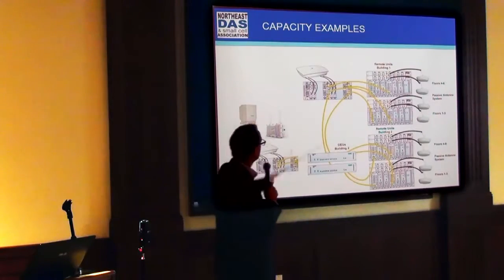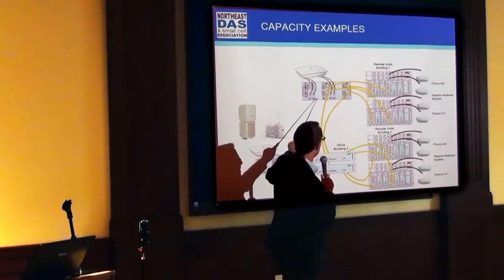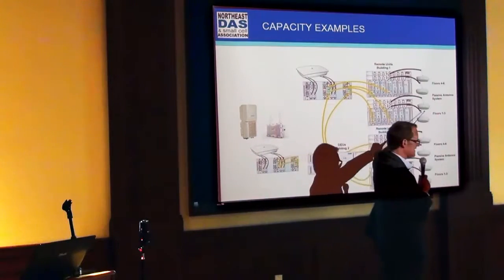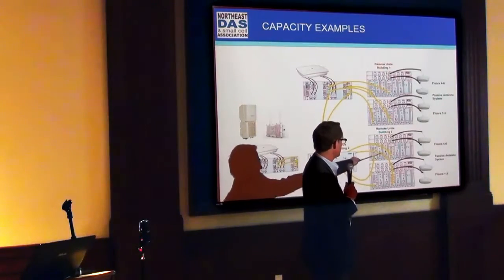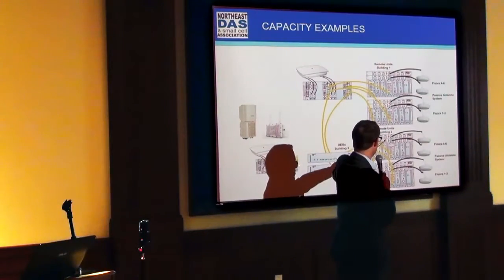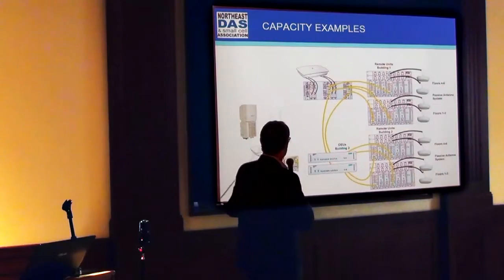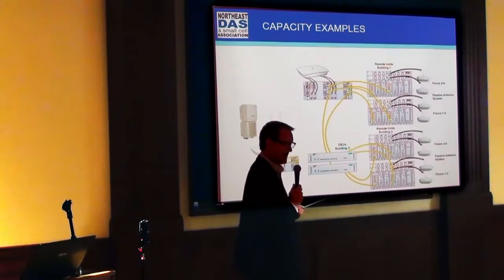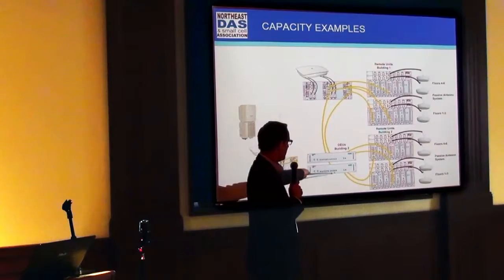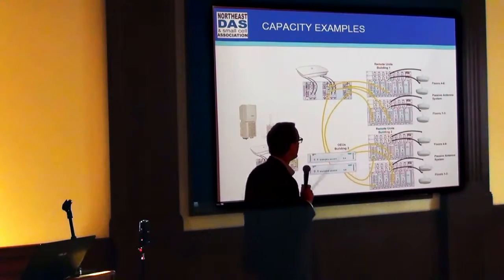Looking at some capacity examples: if you start out with an eFemto or Spider Cloud at your head-end and feed one building, you run your RF into the head-end, you've got optical cards, run optical out to your remotes, and remotes connect to your antennas and passives. If you have a campus environment with another building, you run fiber out to an expansion unit in the basement and run that into other floors. Now if you wanted to add capacity, you could add another Spider Cloud or eFemto, add another head-end piece, remove the optical expansion unit, and run it into building two. Now you've doubled your capacity.